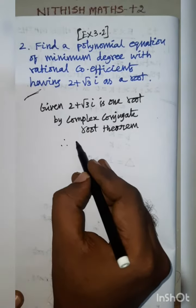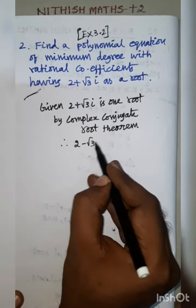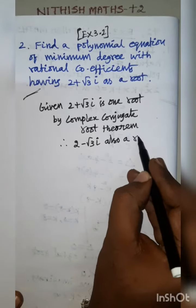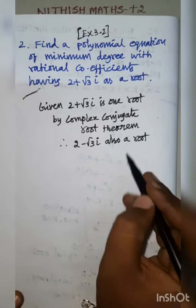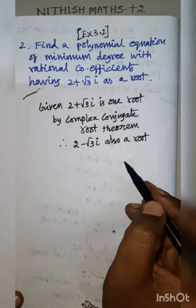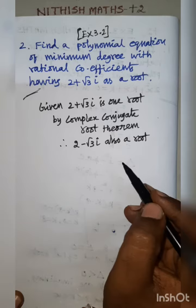Therefore, 2 minus root 3 i is also a root. This is Complex Conjugate Root Theorem. If z is a root, z bar is also another root of the polynomial.